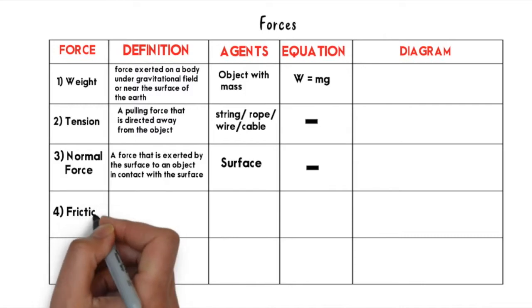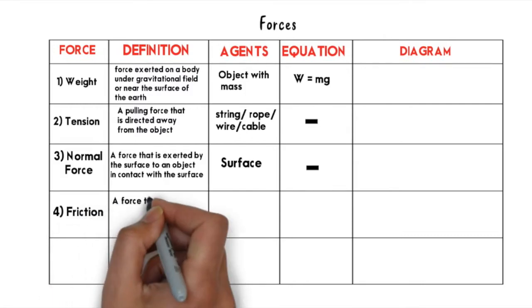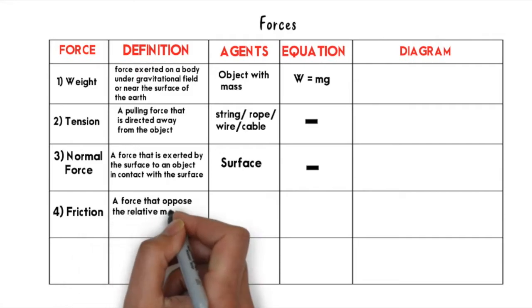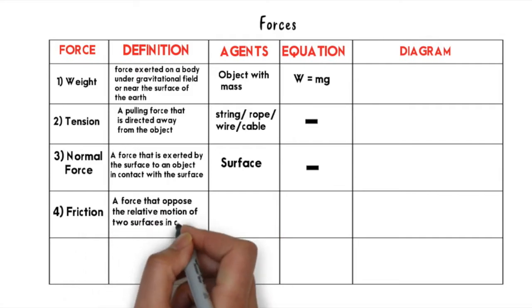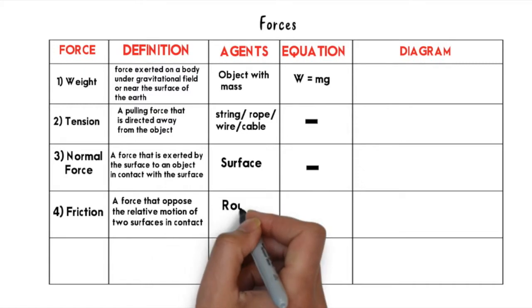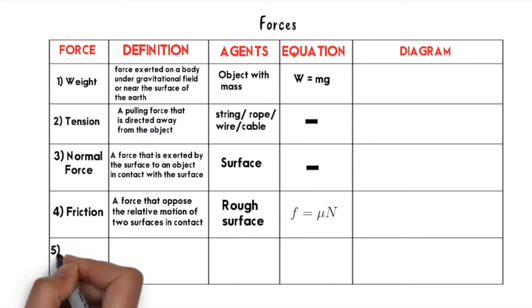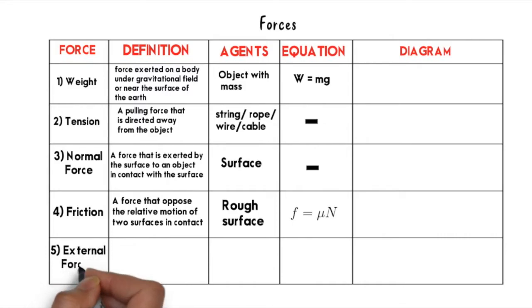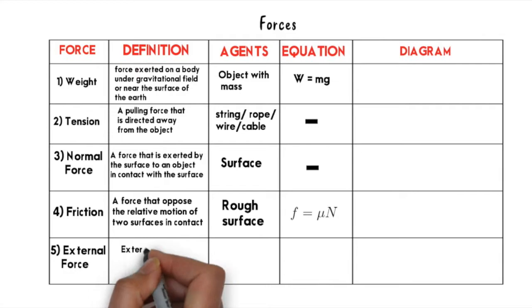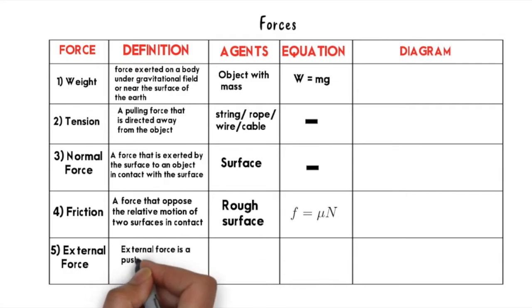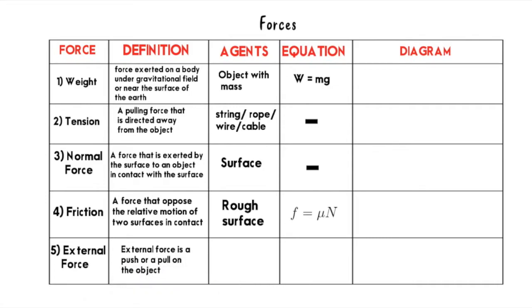The fourth force is friction, which opposes the relative motion of two surfaces in contact, slowing down the motion of an object. The agent is a rough surface. The equation for friction is F = μN, where μ is the coefficient of friction and N represents the normal force. The fifth is external force, which is a push or pull — it has no specific agent and no specific equation.